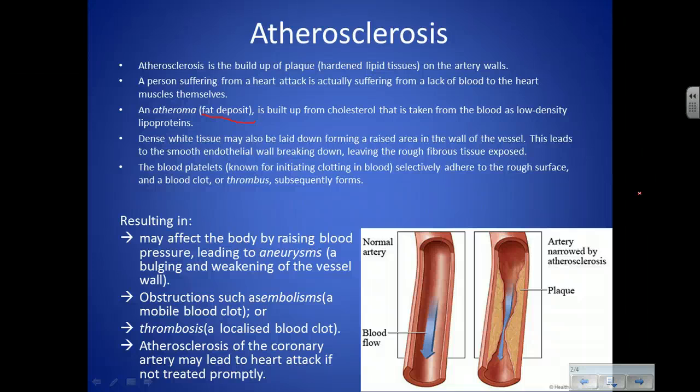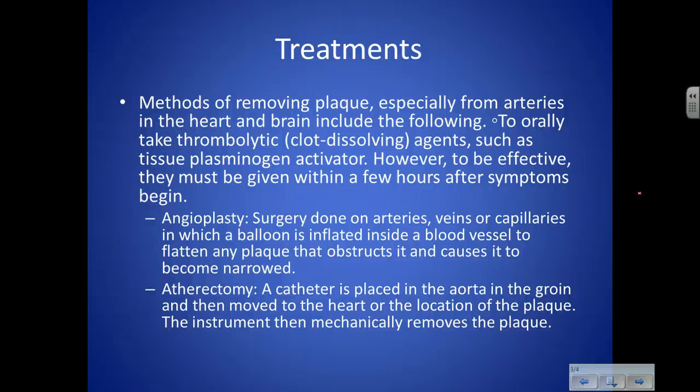Atherosclerosis in the coronary artery — the artery that supplies the heart muscle with blood — can cause a heart attack if not treated promptly. There are ways to treat this. You can take a thrombolytic, which causes plasma to attack the clots and dissolve them, using white blood cells. You can take these orally, but you must take them as soon as symptoms begin.